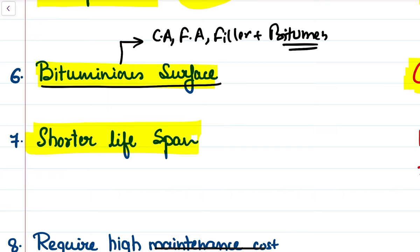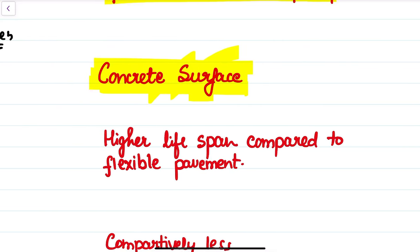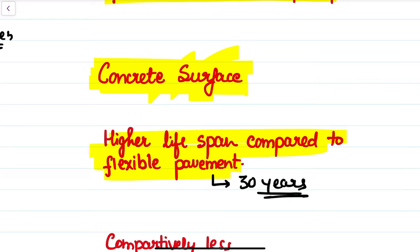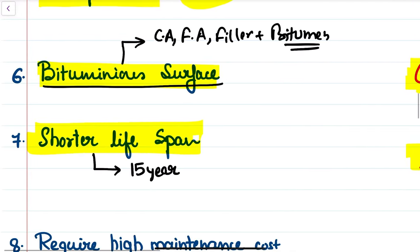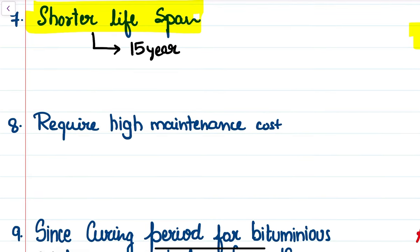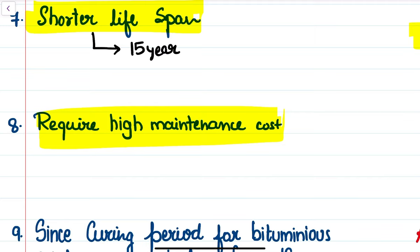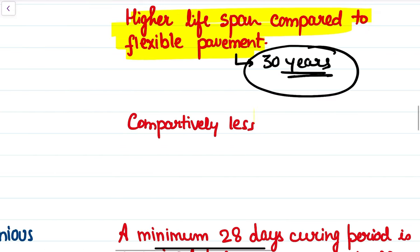The seventh difference is lifespan: the design life of a conventional flexible pavement is 15 years, while that of a rigid pavement is 30 years. Rigid pavements therefore have a higher design life. The eighth difference is maintenance: flexible pavements require frequent maintenance compared to rigid pavements — in terms of overlaying, milling, and other techniques — whereas rigid pavements do not require as much frequent maintenance.